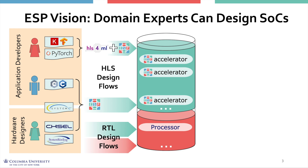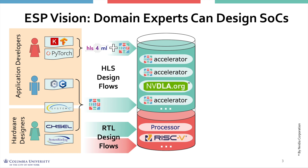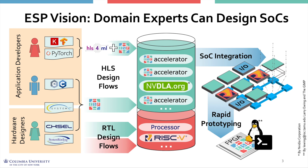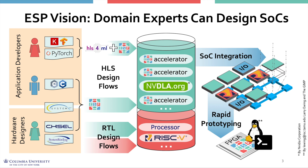ESP enables the integration of newly developed accelerators with third-party intellectual property blocks that speak the AXI protocol. ESP includes the Ariane RISC-V processor cores and the NVIDIA DLA accelerator. ESP comes with a graphical user interface that guides designers through interactive floor planning of the system-on-chip and has push-button capabilities for rapid prototyping on FPGAs. The ESP design methodology is effective because it was developed together with the companion ESP architecture.